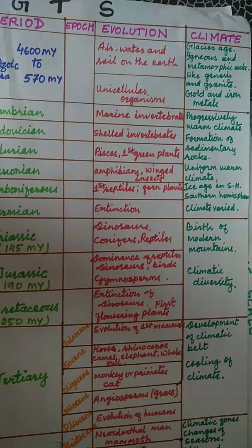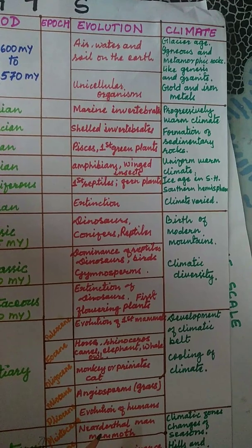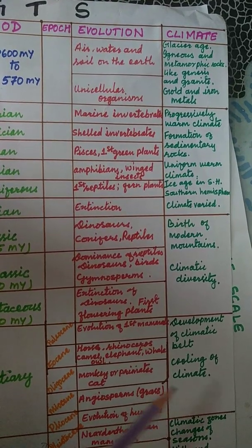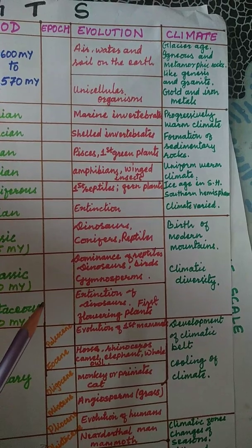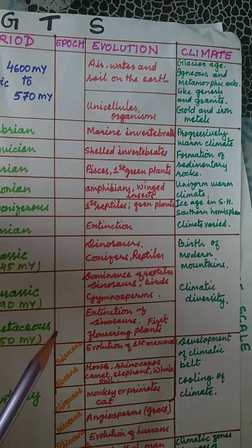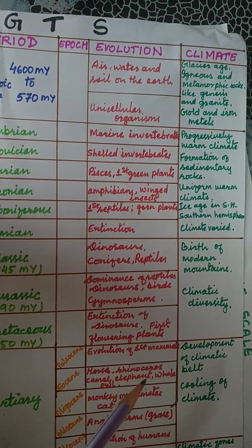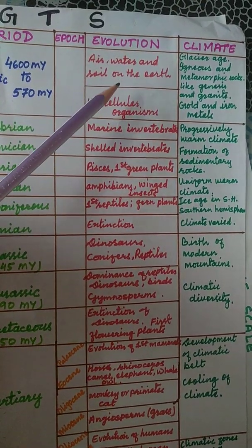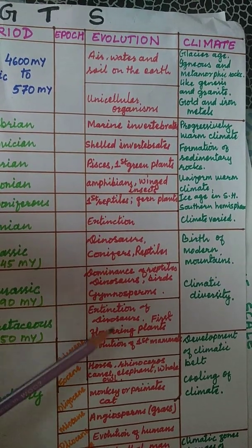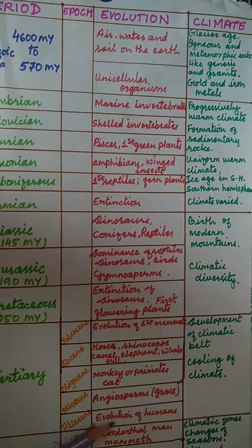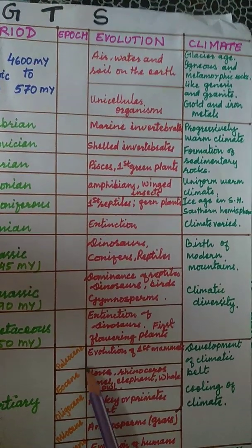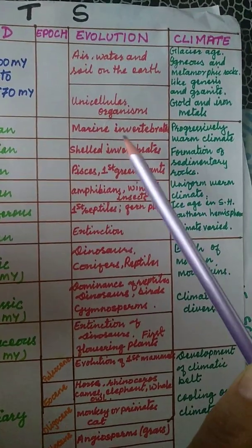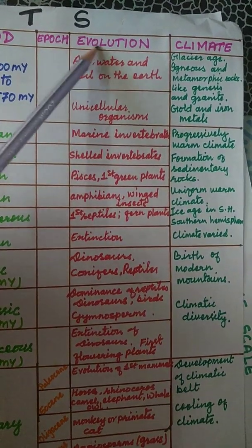The geological time scale shows the evolution of living beings on Earth — how simple living organisms gradually changed to become complex organisms like mammals. Studying this column makes it clear how life evolved. In the beginning, there was air, water, and soil, and unicellular organisms appeared during the Pre-Cambrian era. Geological time scale clearly demonstrates that evolution has occurred on Earth.